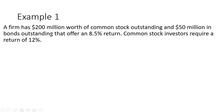Example 1. A firm has $200 million worth of common stock outstanding and $50 million in bonds outstanding that offer an 8.5% return. Common stock investors require a return of 12%. Let's calculate the weighted average cost of capital.